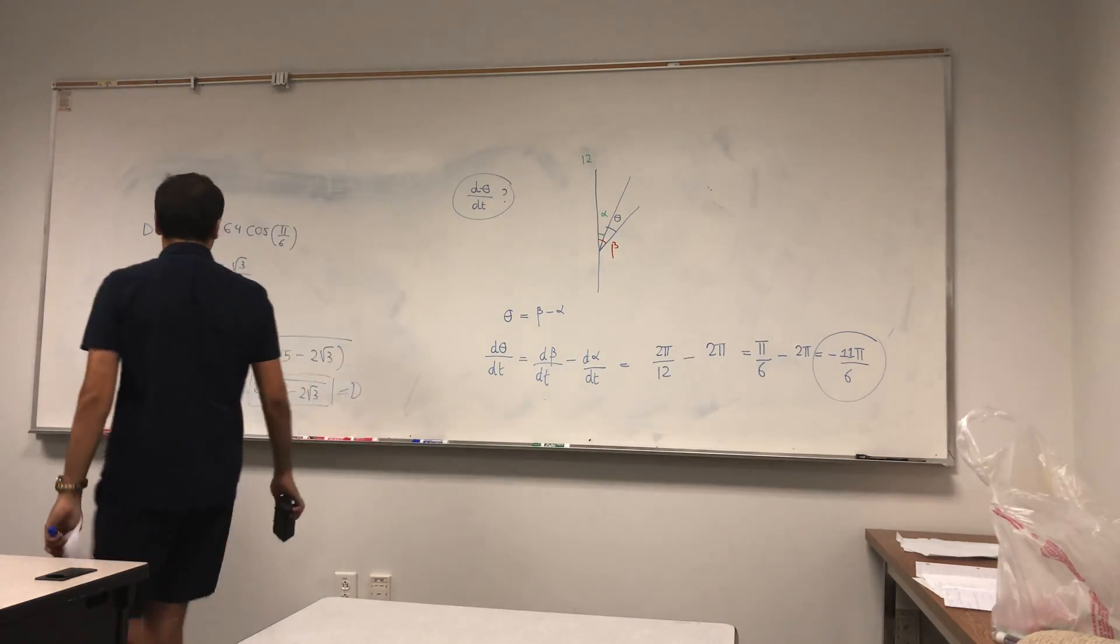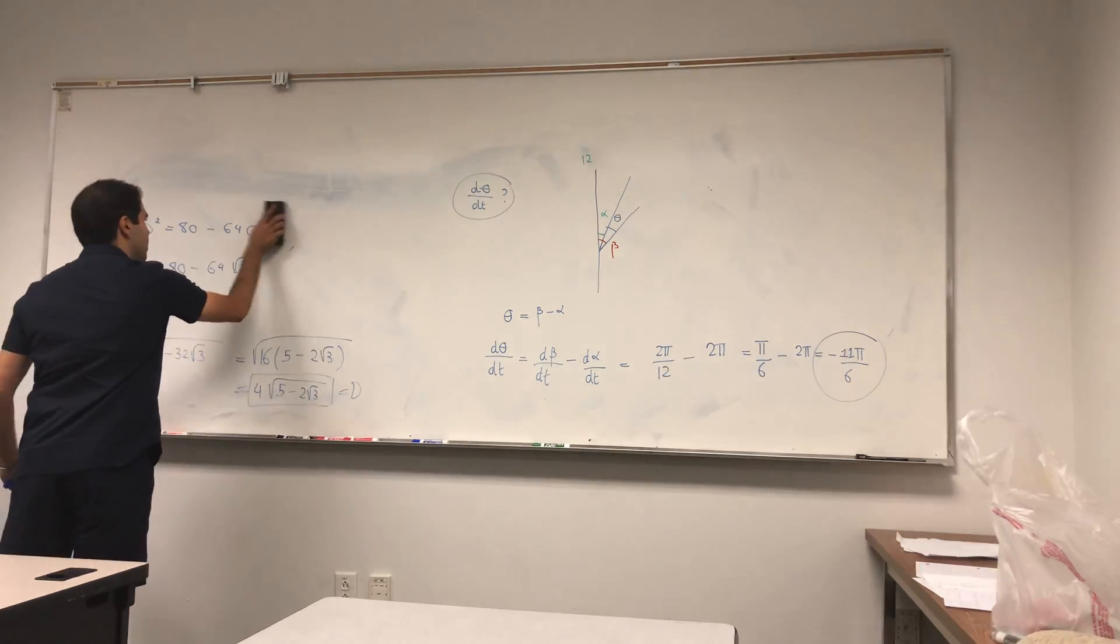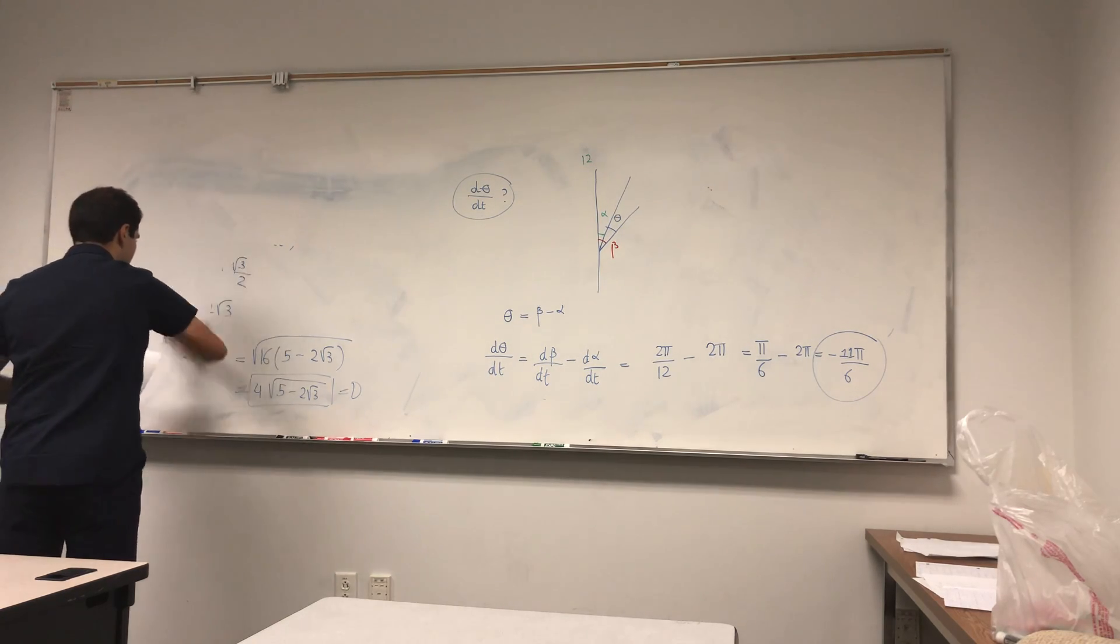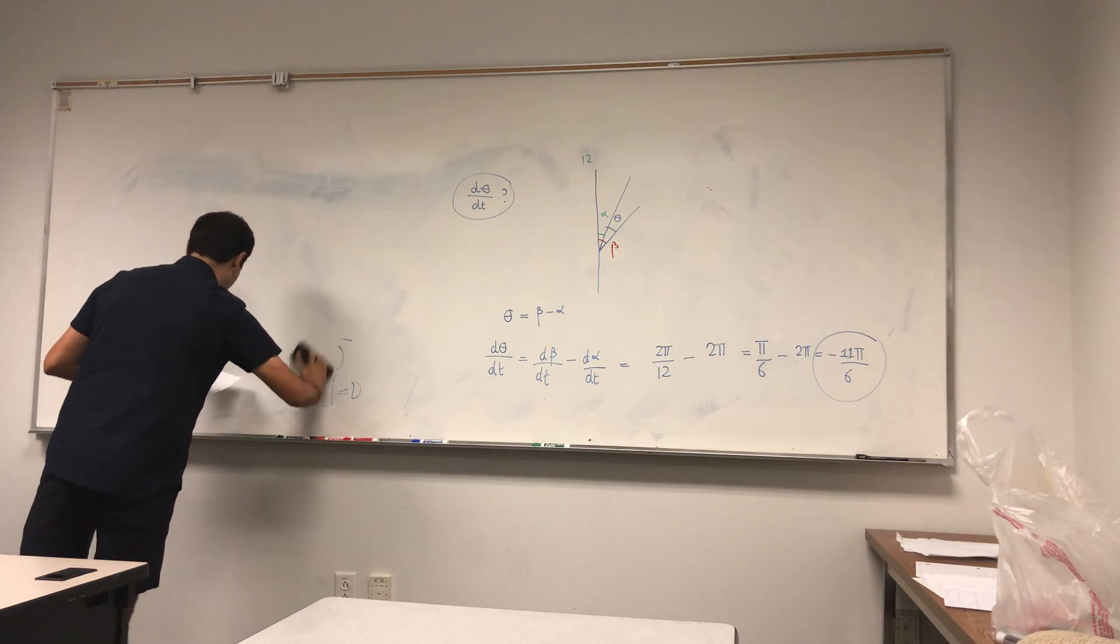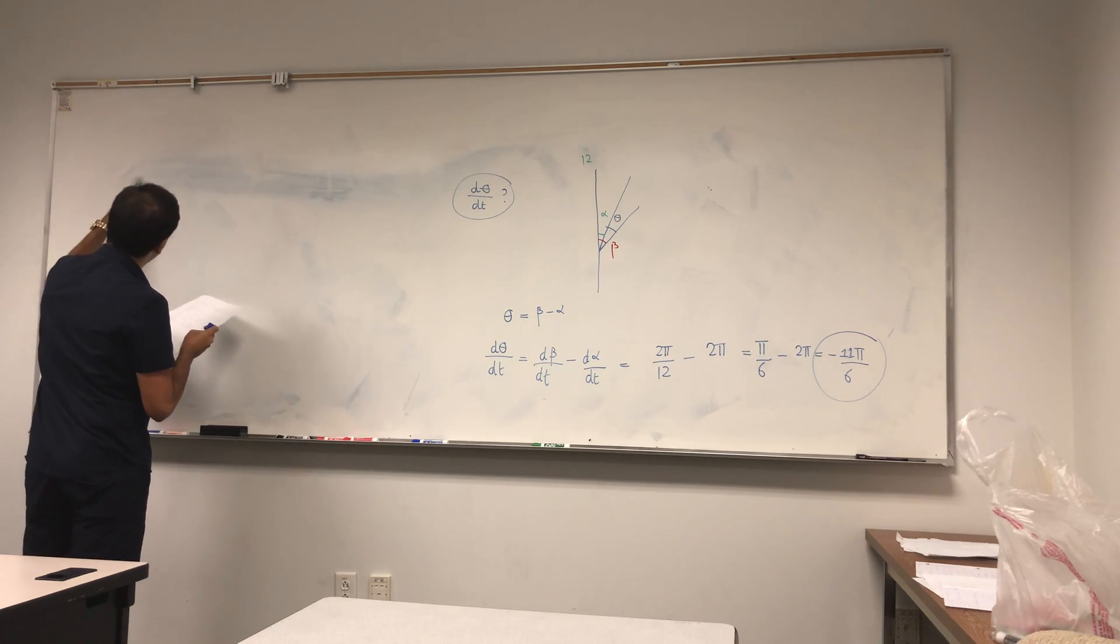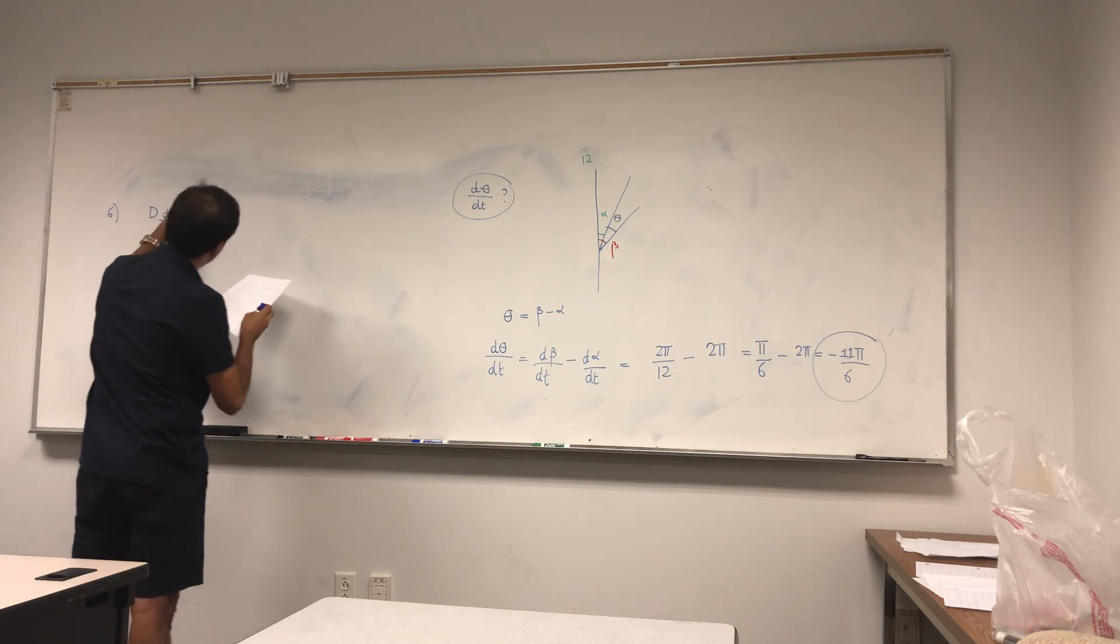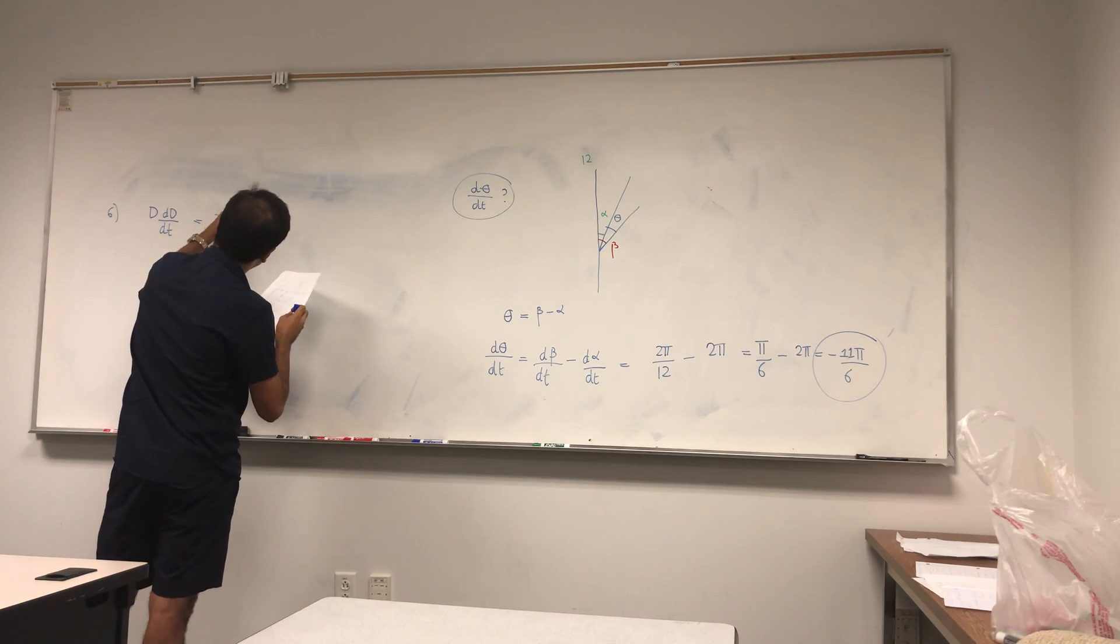Because we figured out all the quantities we wanted. We figured out theta, we figured out the distance, we figured out d(theta)/dt. And now it's just a matter of plugging everything in. So I think it's the sixth step. Again, come back to dD/dt equals 32 sine of theta d(theta)/dt.